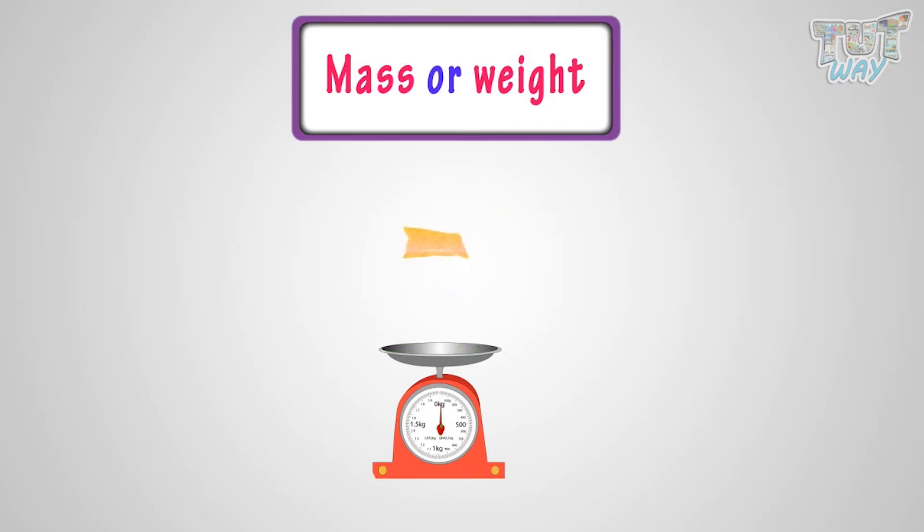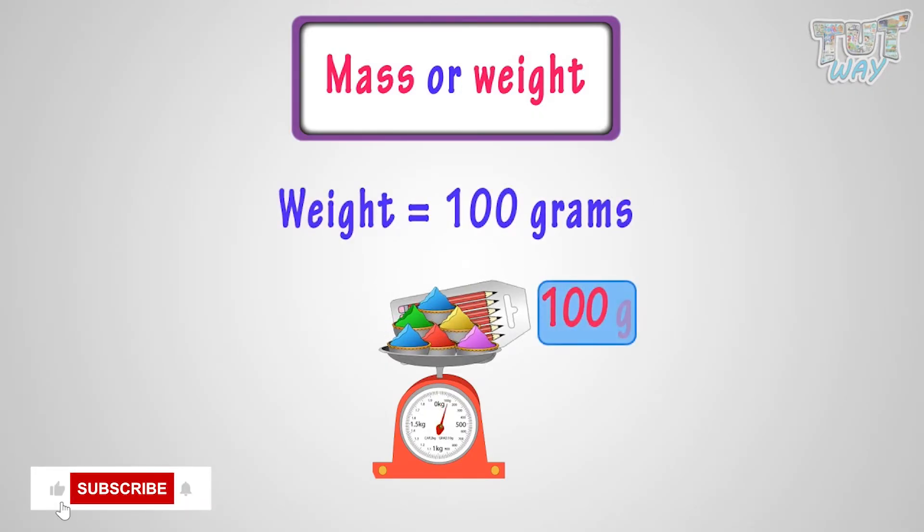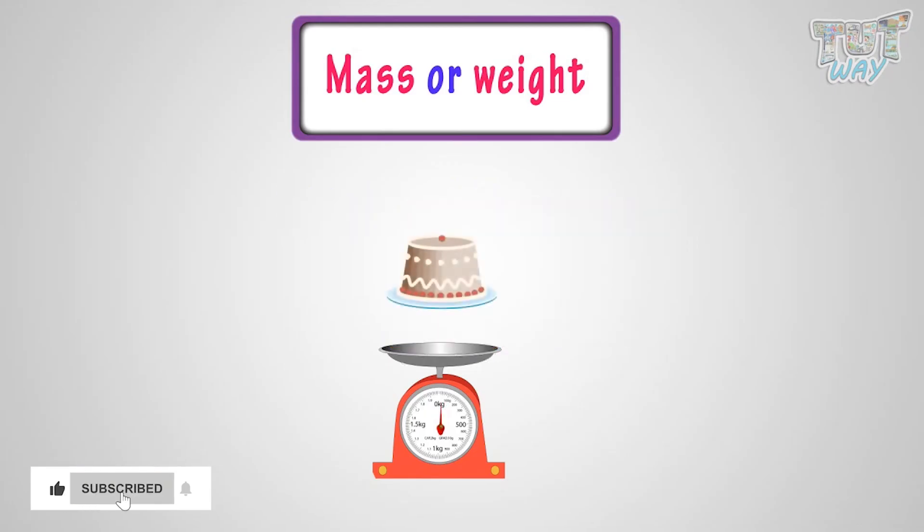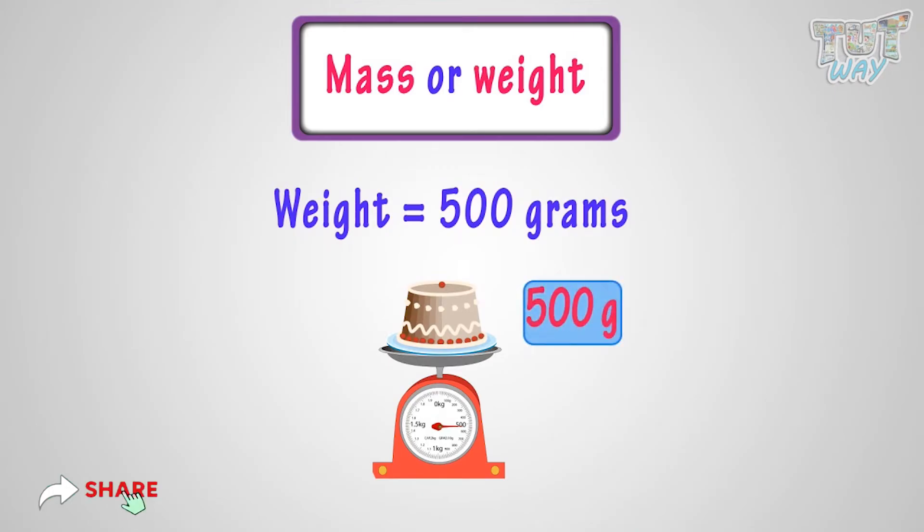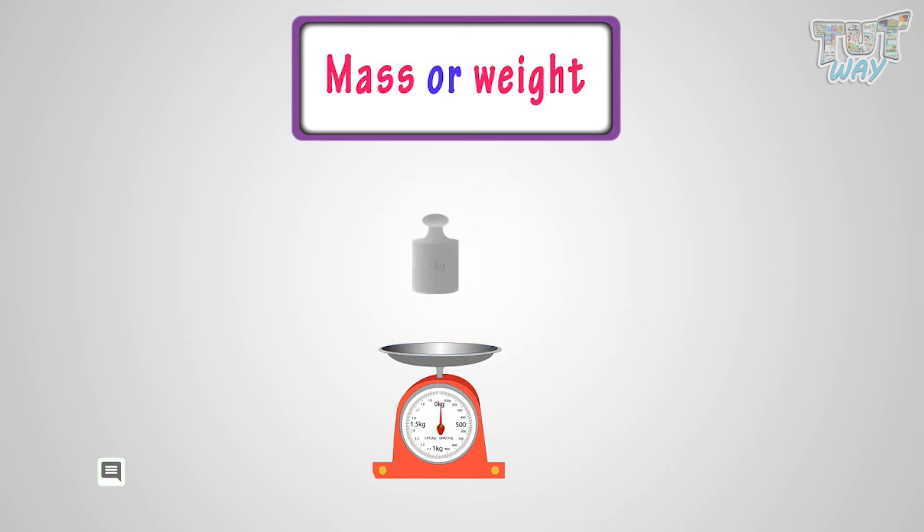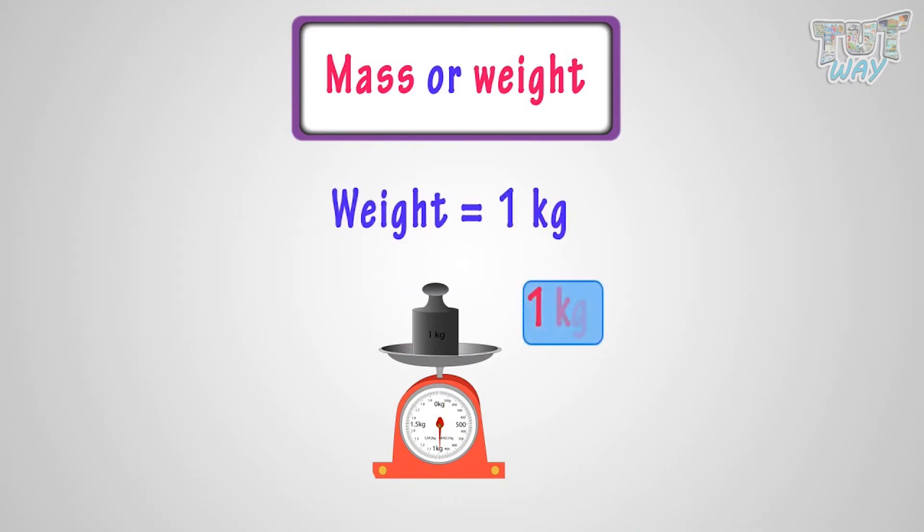Here is a packet of some eatable that weighs about 25 grams. Here is a small gift weighing 50 grams. Here are examples of some things weighing 100 grams. Here is a cake weighing about 500 grams. Here is an object weighing 1 kilogram or 1 kg.